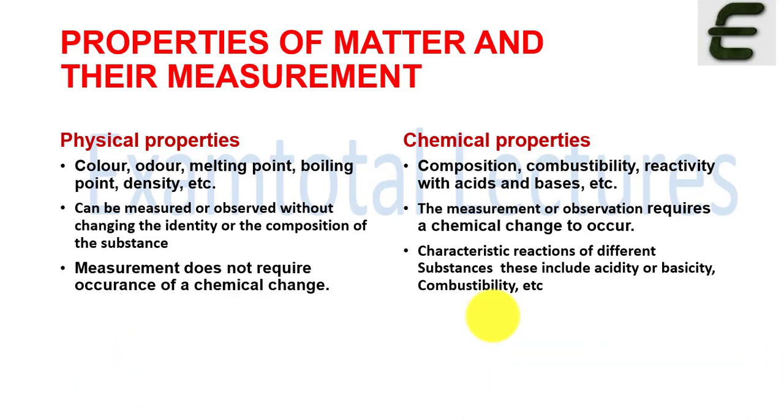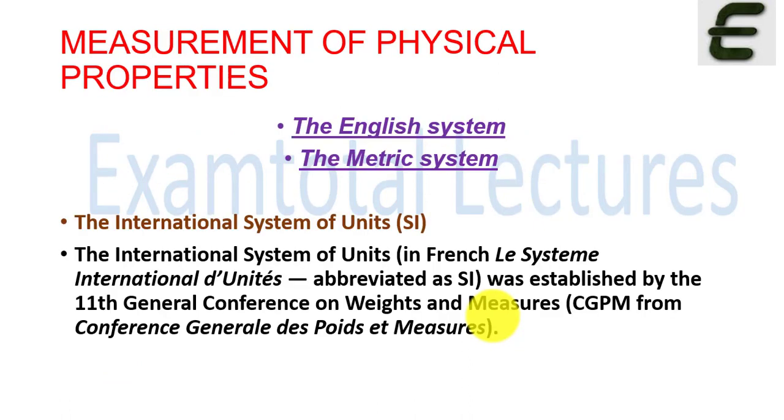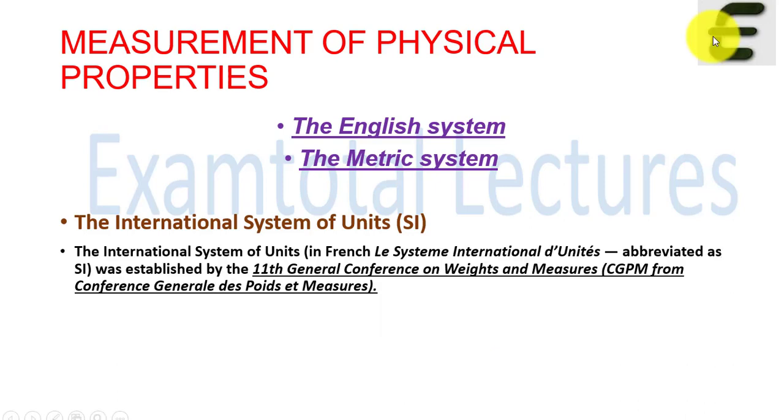So this was the classification of physical property and chemical properties. If we look at physical properties in detail - if you have to do their measurement, like if we are checking melting and boiling point, then we have to tell it in temperatures. So which unit do we use for temperature? When we use any measurement, we use units.